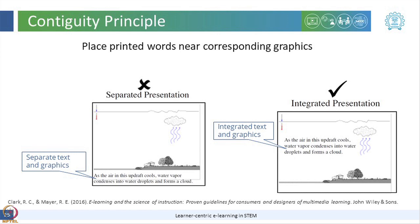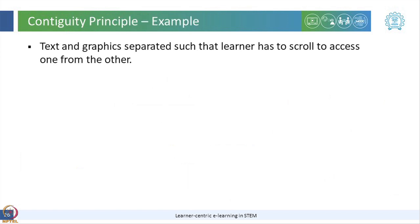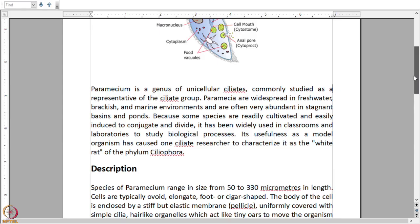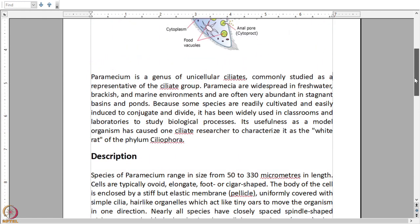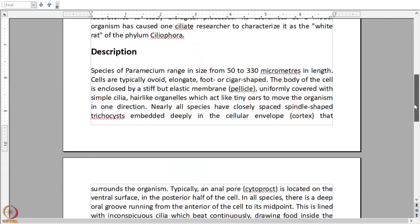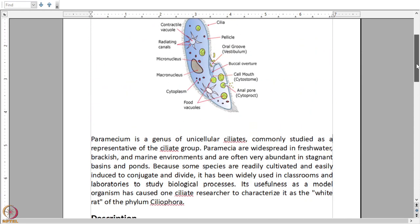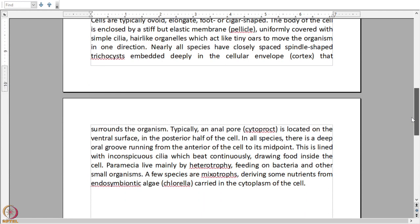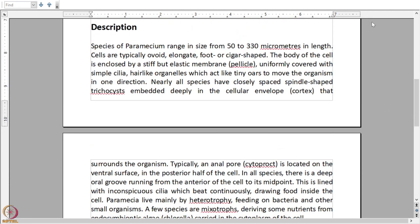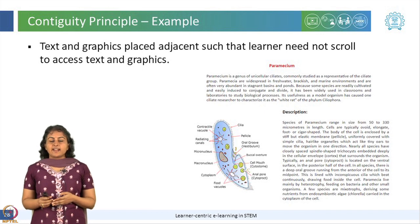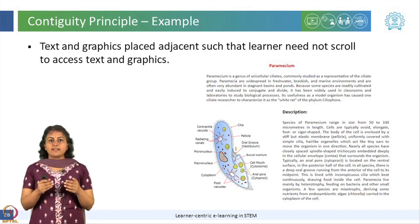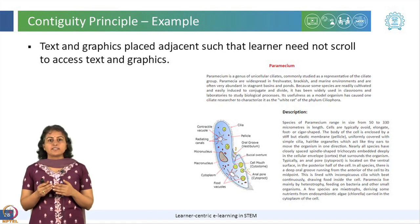This enables learners to devote their cognitive resources to better understanding of the content. Here is an example where the text and graphics have been separated, forcing the learner to scroll through the content or move their eyes repeatedly to access different parts. Contiguity principle recommends keeping both graphics and the related words close together and not separating them as one way to mitigate this problem.